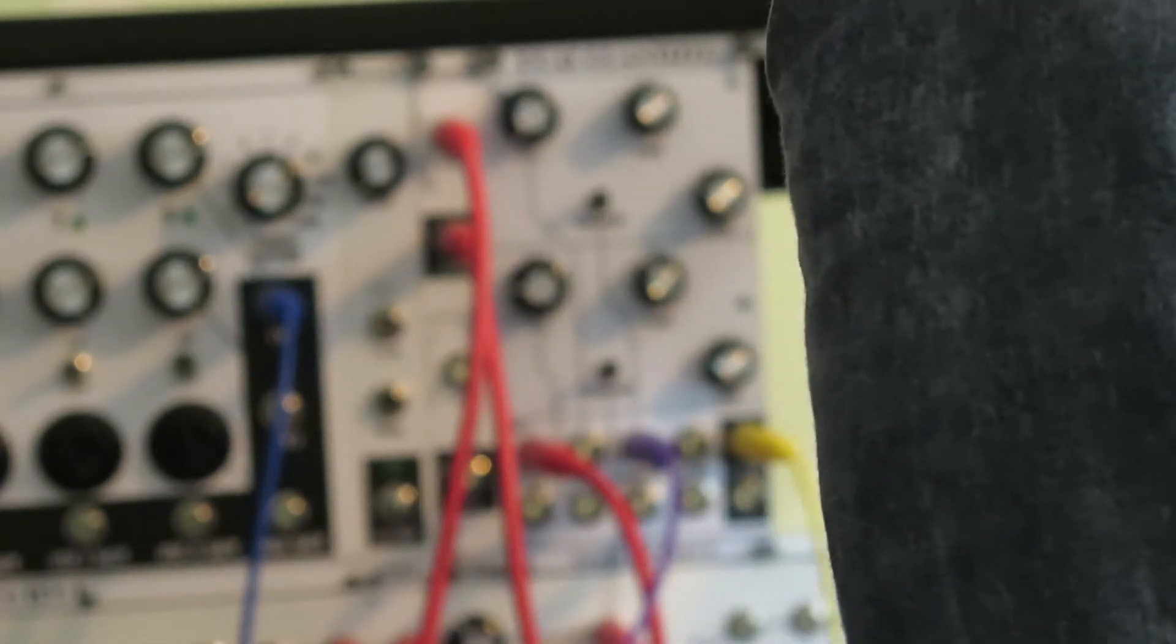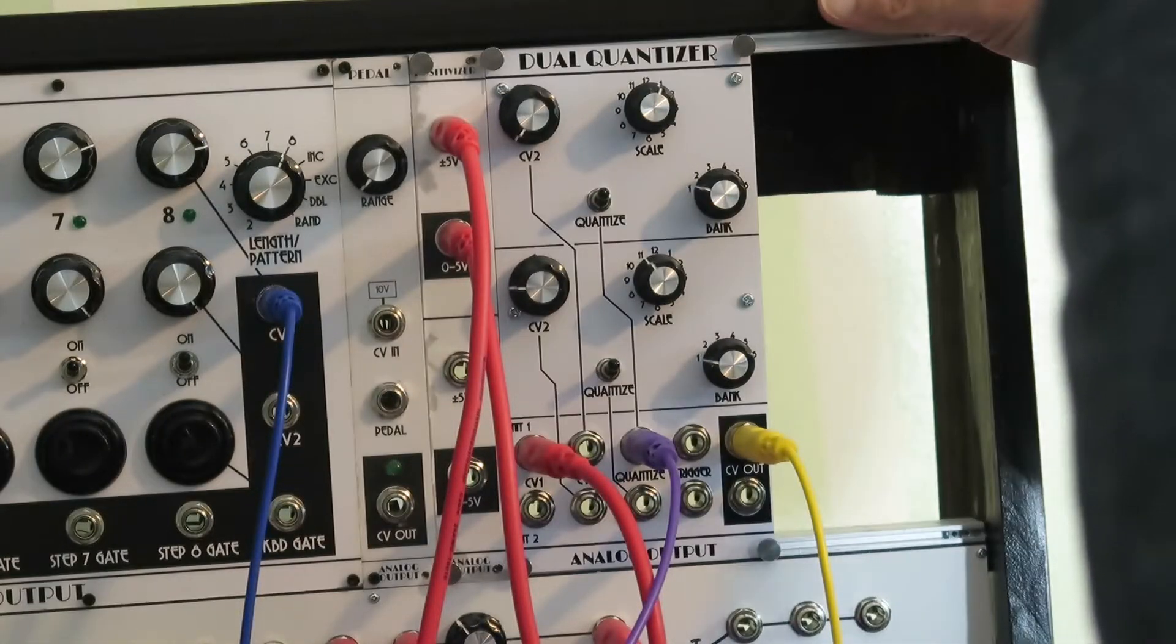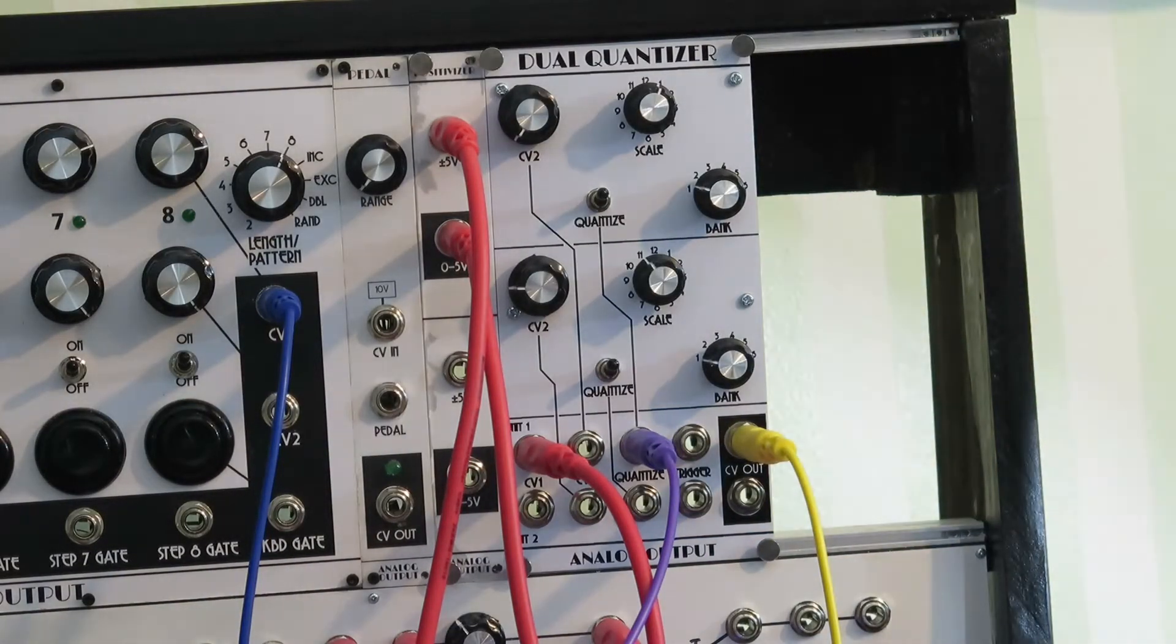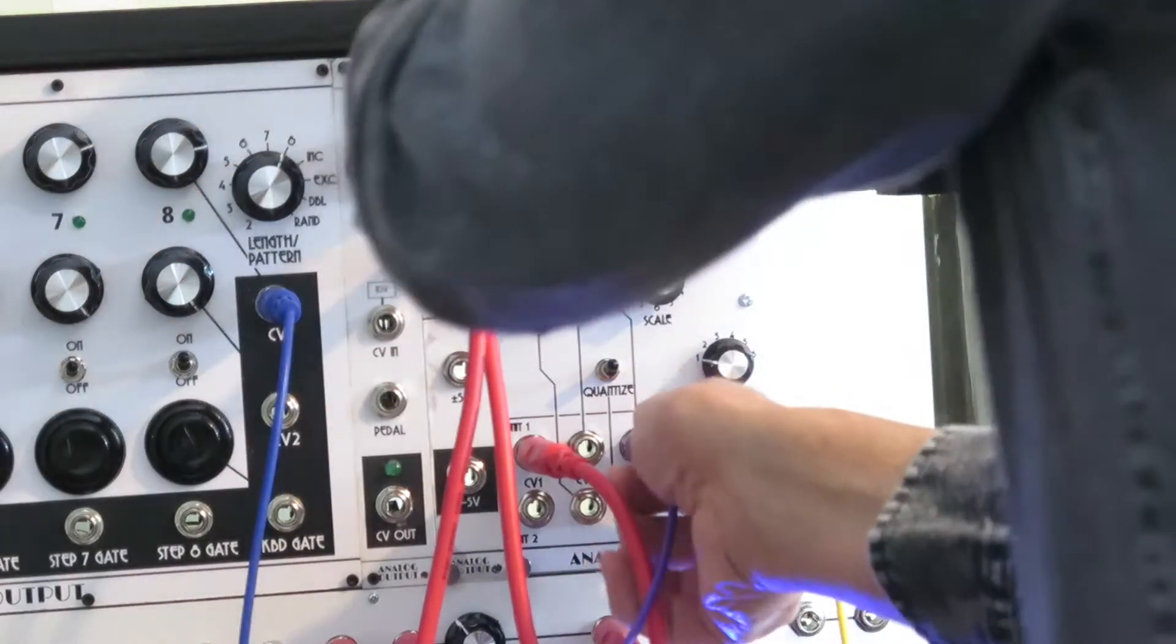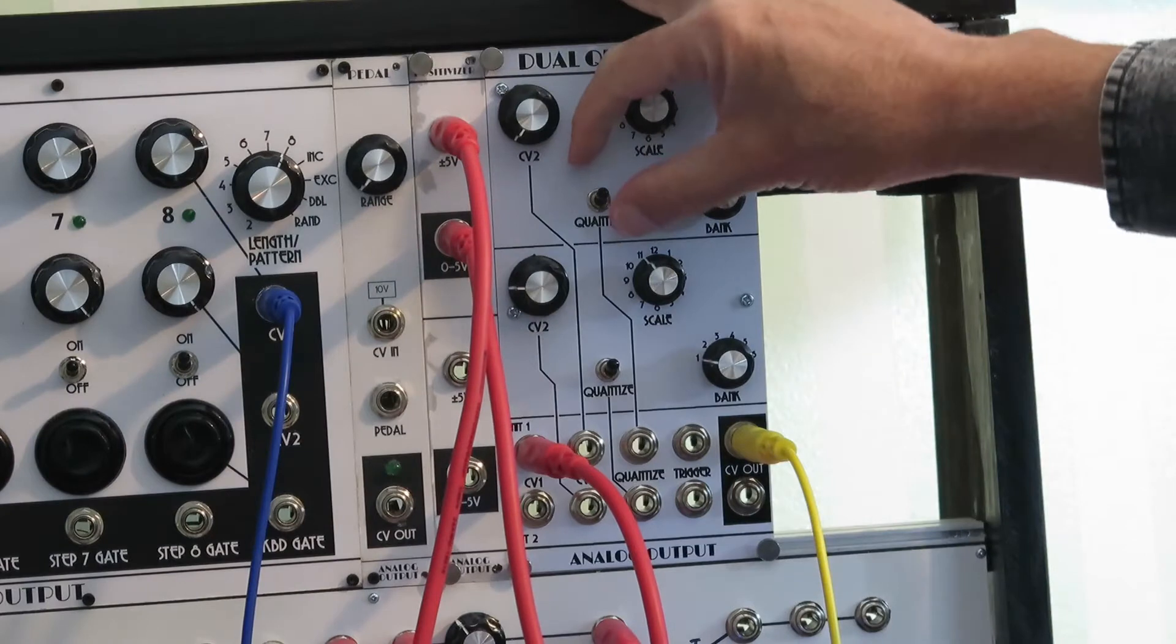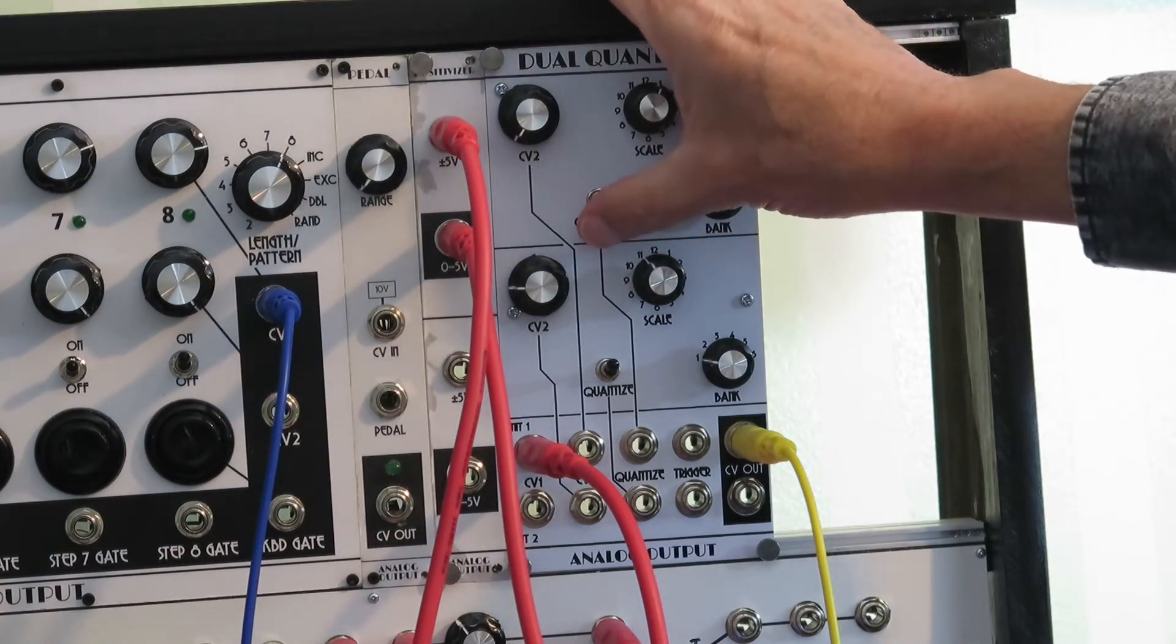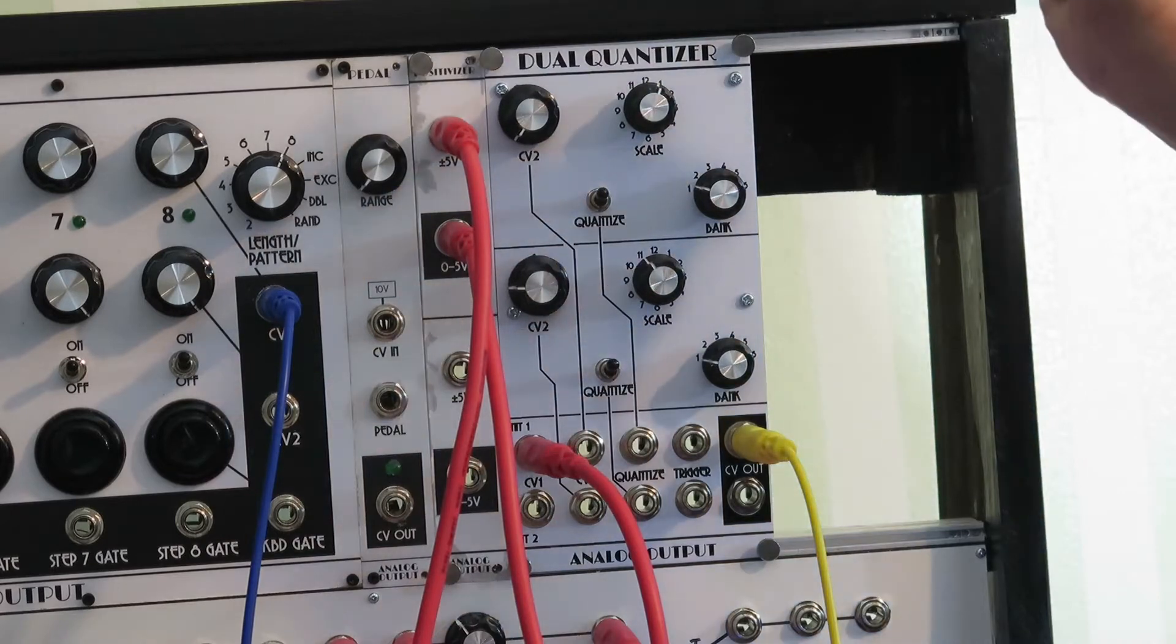Let's feed it a wide gate. Then as long as the gate is on, it's quantizing. When the gate turns off, it stops quantizing. Or we can use this toggle switch to manually turn quantization off, quantization on.